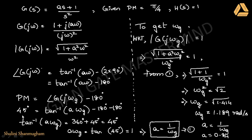We know that the phase margin is given by the phase angle at the gain crossover frequency minus 180 degrees. Substituting the phase margin, which is π/4 or 45 degrees, I get: a = 1/ωg, that is, 1 divided by the gain crossover frequency.